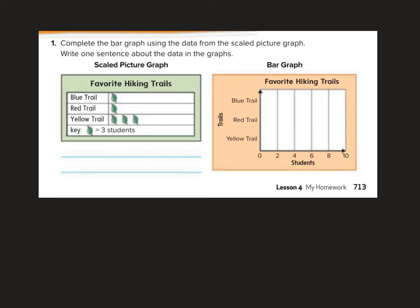Complete the bar graph using the data from the scale picture graph. Write one sentence about the data in the graphs. Each leaf is worth three students. So the blue trail has three students. It says that they're favorite hiking trail. The red trail also has three students. Oh, you guys. Look at it. I assumed it went up by threes. Does it go up by threes? Uh-uh. Go halfway between two and four is three. Look at that. I fell into the trap. I'm glad I caught myself. 3, 6, 9. Yellow trail has nine kids, halfway between eight and ten.